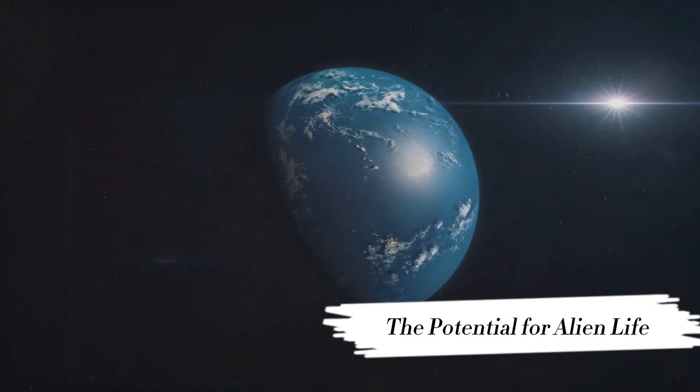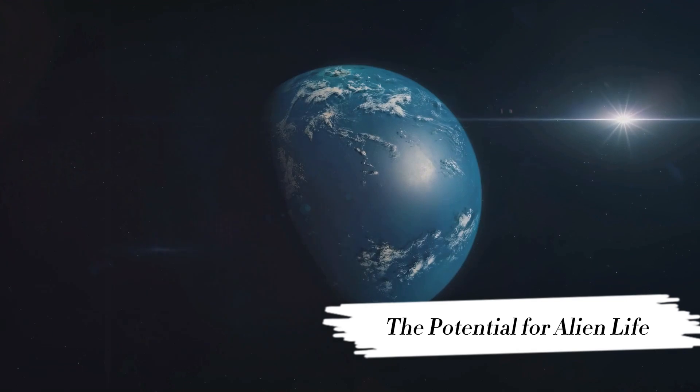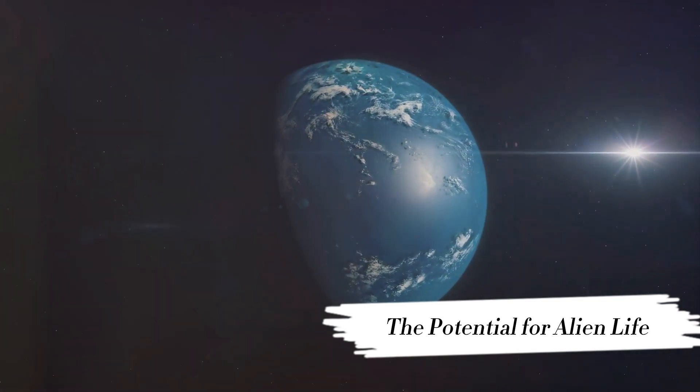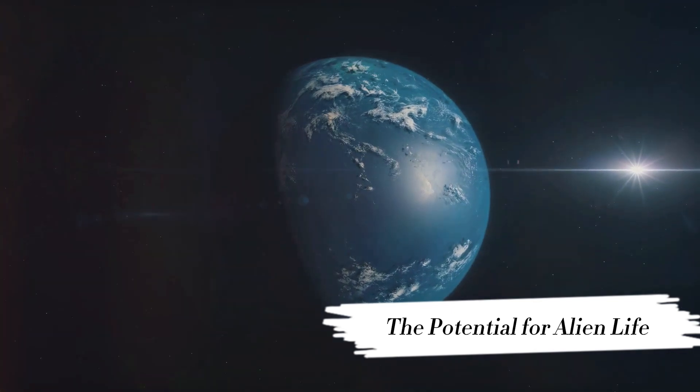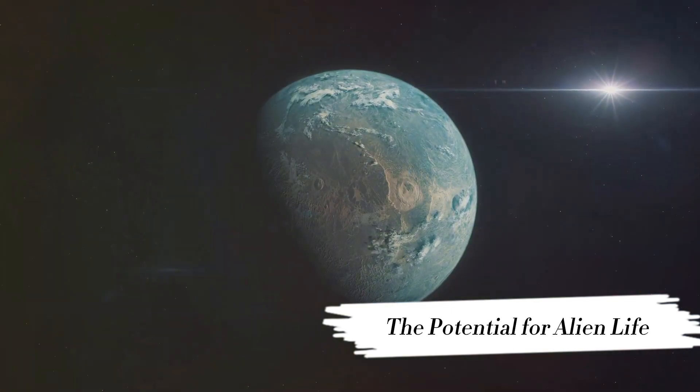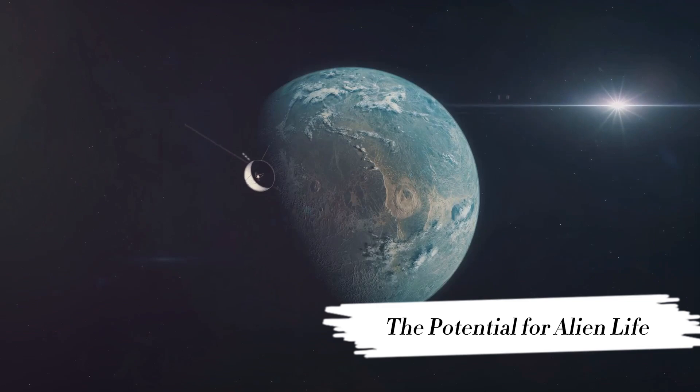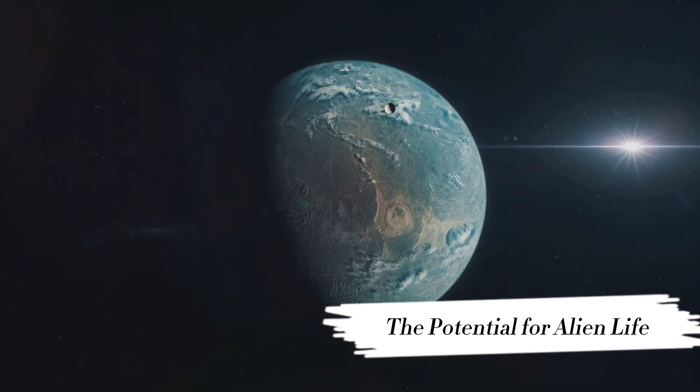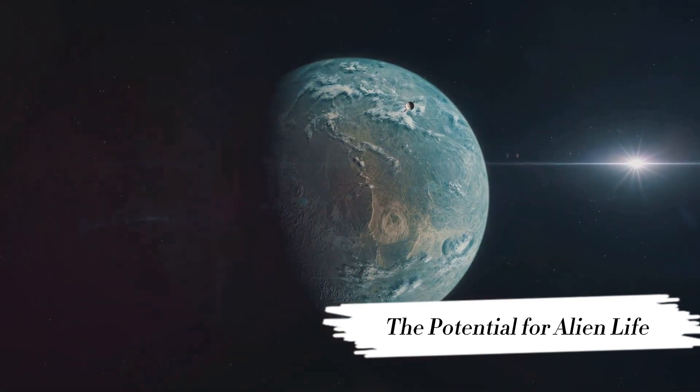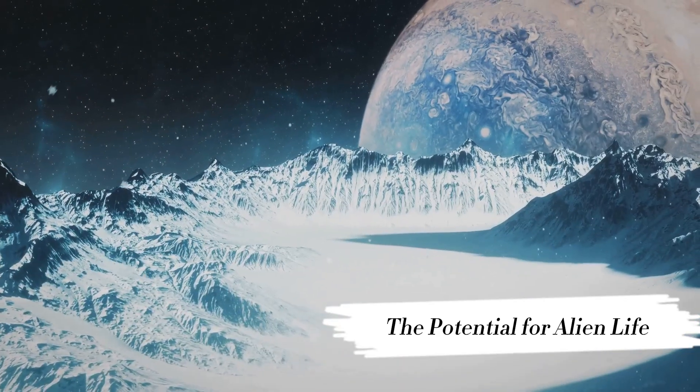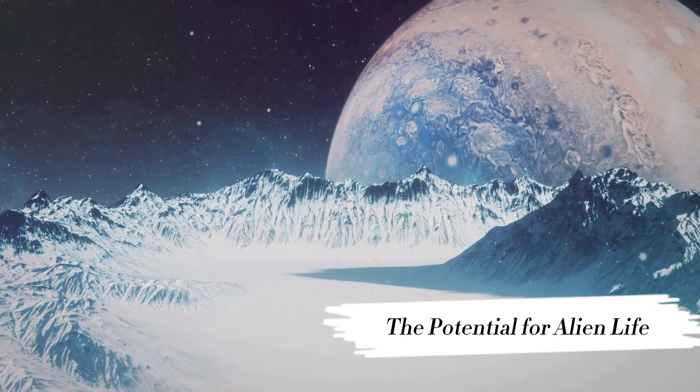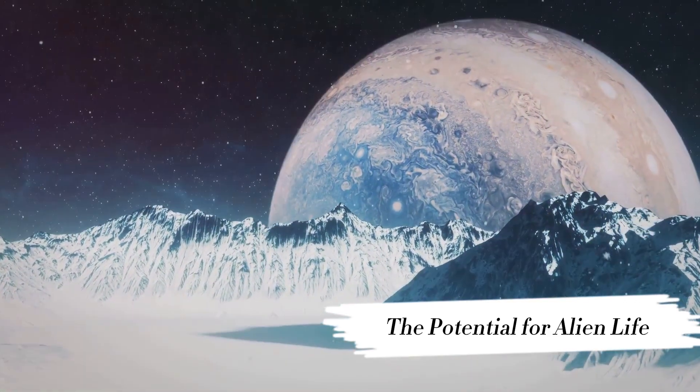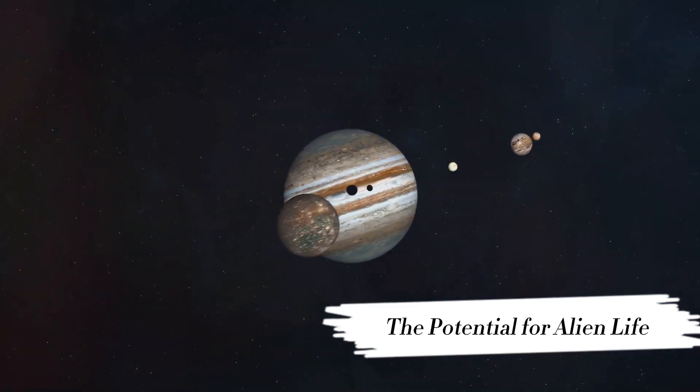The habitable zone is where the temperature allows for liquid water to exist on a planet's surface, a crucial ingredient for life as we know it. This concept, also known as the Goldilocks zone, is the foundation of astrobiology, the study of potential life beyond Earth. There's a significant amount of research dedicated to finding these Goldilocks planets, where conditions are just right for life. Yet the search for extraterrestrial life is not limited to these zones. Some scientists believe that life might exist in conditions vastly different than those on Earth.